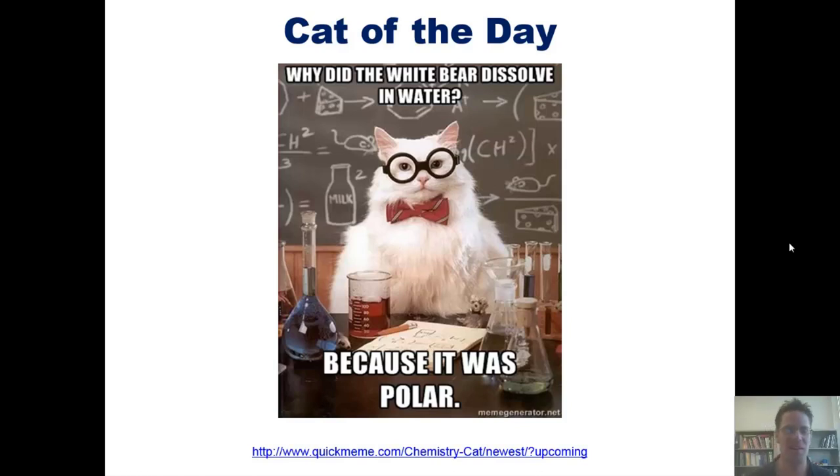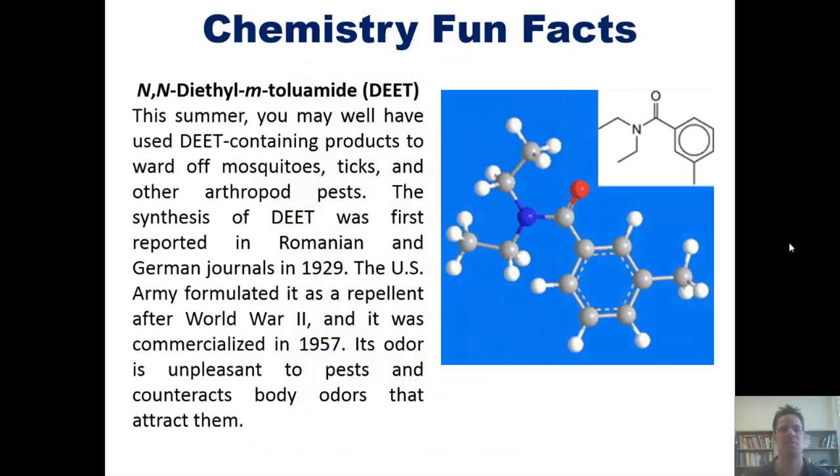I also wanted to share with you an interesting chemistry fun fact. This is about DEET, which is a molecule found in a lot of mosquito and other bug repellents, but it's formally known as N,N-diethyl-m-toluamide, whose structure is shown here.